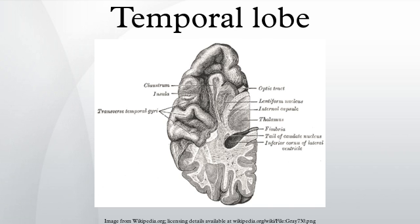Temporal lobe epilepsy is a chronic neurological condition characterized by recurrent seizures. Symptoms include a variety of sensory hallucinations, as well as an inability to process semantic and episodic memories.